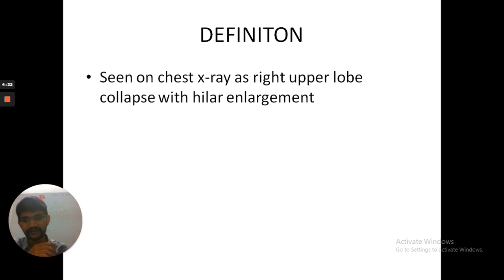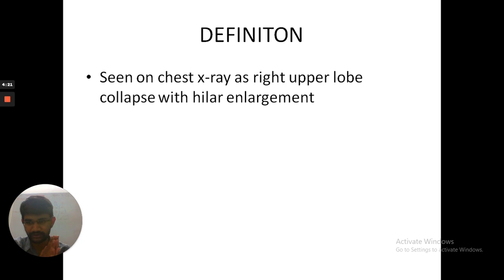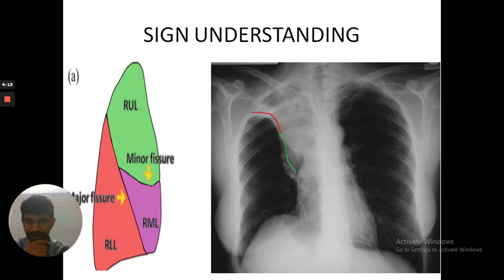So what is the definition? The Golden's sign is mainly seen on chest X-ray PA view as a right upper lobe collapse with hilar enlargement. The sign is used mainly when there is a right upper lobe collapse associated with hilar enlargement.